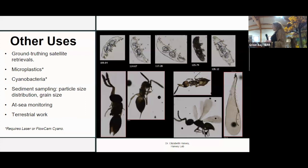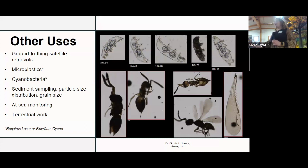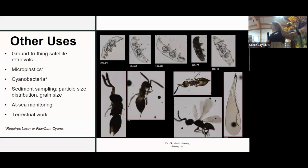There are a lot of other uses for this machine. You can ground-truth satellite retrieval and pair it with other results to get a really strong data set. You can use it to do microplastics and cyanobacteria research as well — that does require either the purchase of a laser or the FlowCam Cyano. You can do sediment sampling, which will let you look at particle size distribution or grain size. It can travel at sea — it's about the size of a regular desktop computer, so it travels decently well. It can also be used for terrestrial work; we did have someone in our lab who used it to look at the larvae of parasitic wasps in blueberries. And I also have some tardigrade images just because I really love them.